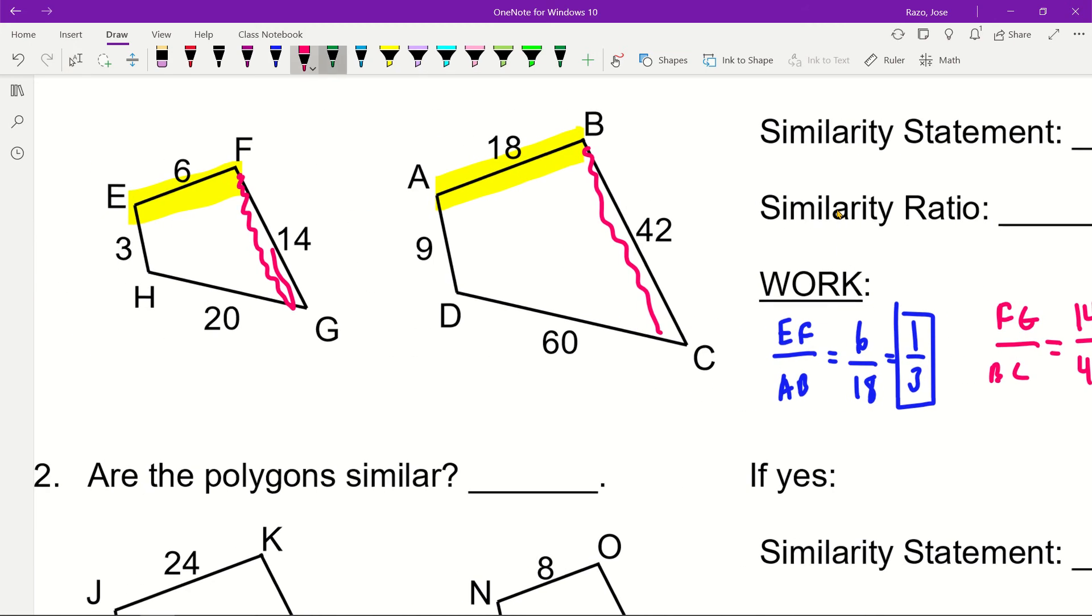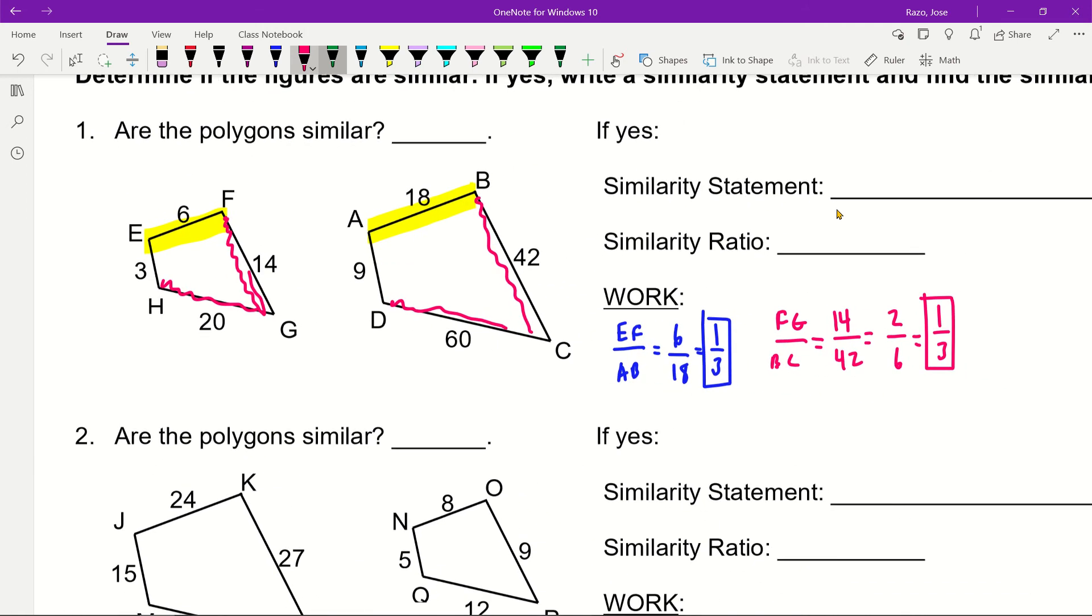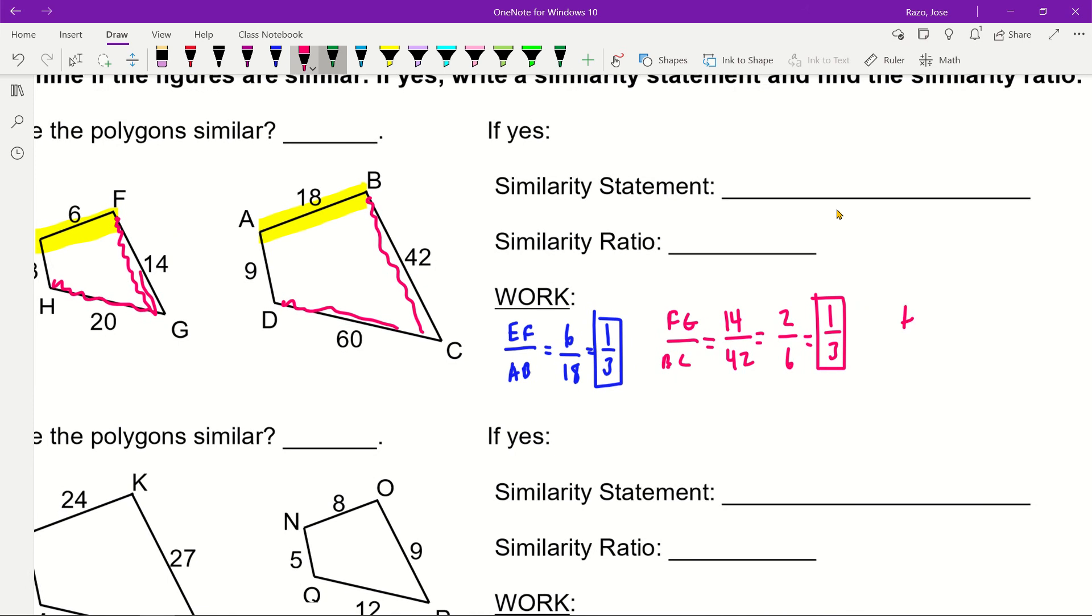Next we have HG and DC. I'm going in order, so I'm not skipping around. Whatever order I'm in, I have to place those same letters in that way. HG is 20 and DC is 60. Divide them by 20 and you'll get one-third.